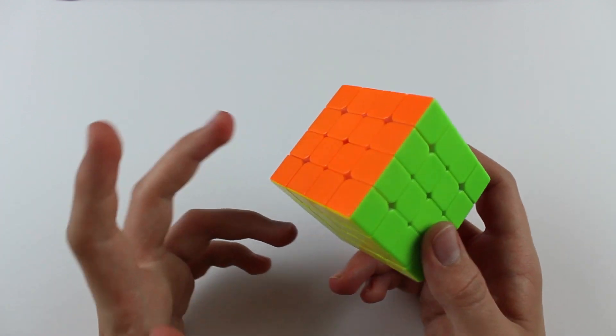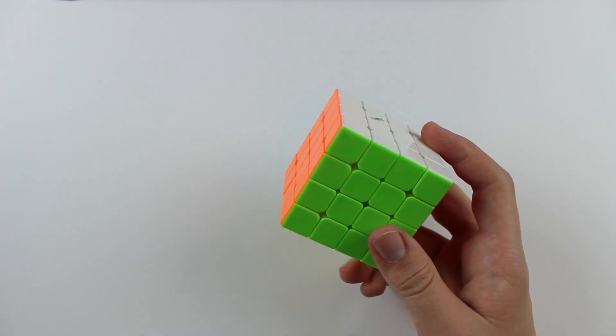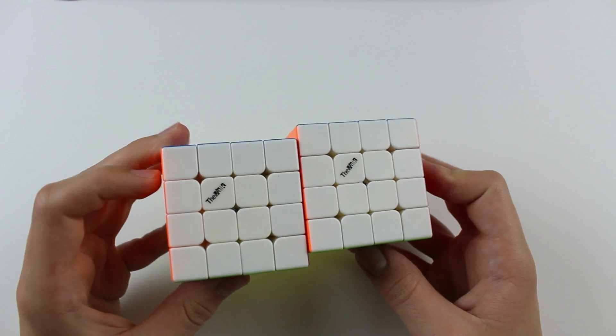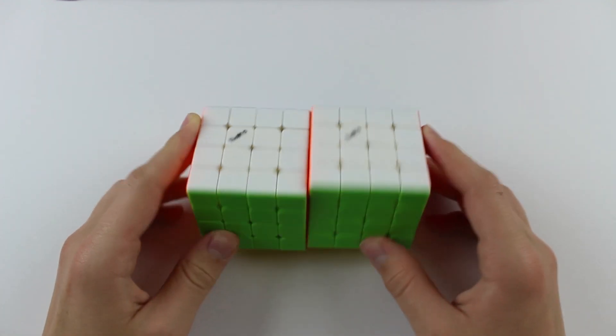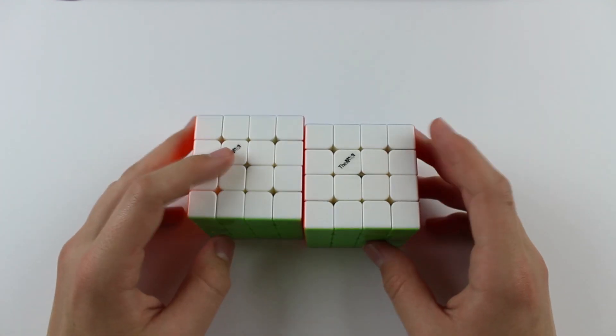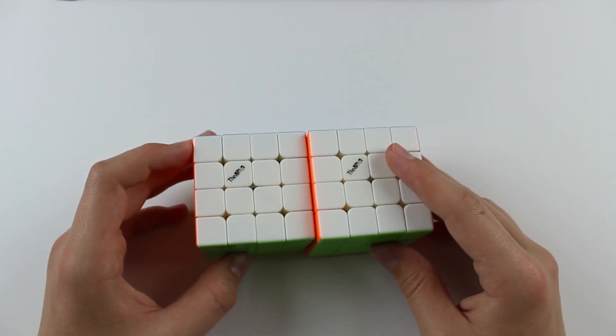So it's not to say that either of these cubes are bad, but they certainly don't live up to the expectation I would have had for something in the Valk line. And I would say that it's better to go with a different option for a 4x4 rather than these two.